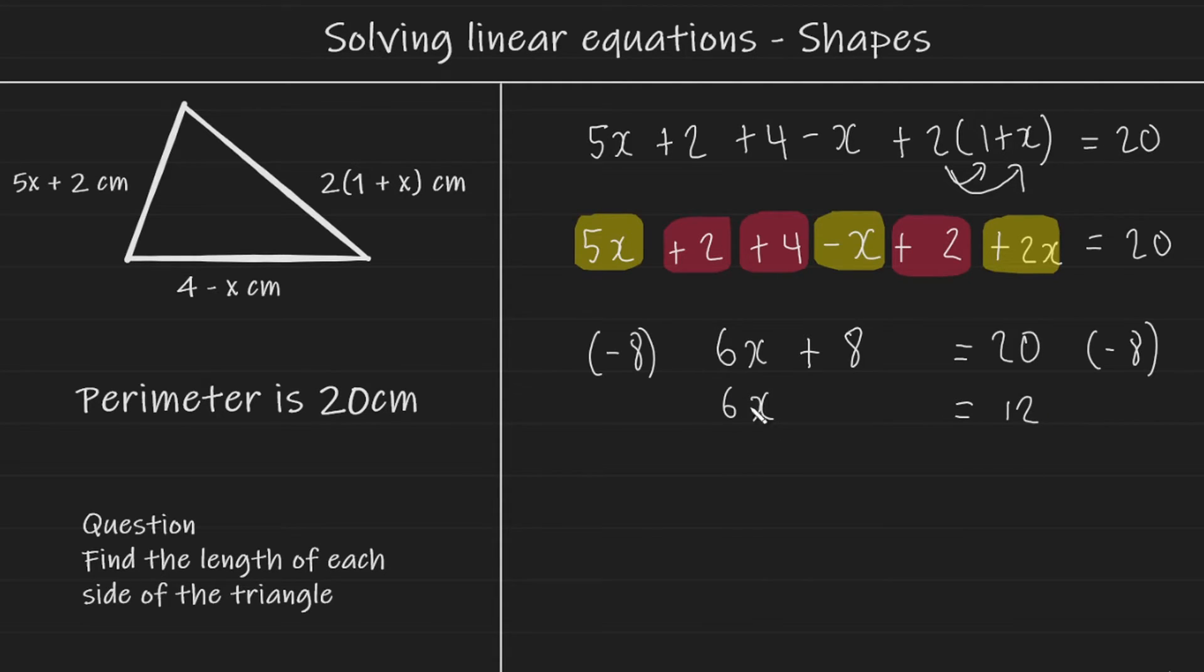I'm now going to eliminate the 6, which is being multiplied to the x by dividing it. So it's going to be divided by 6, divided by 6. And this leaves me with x is equal to 2.